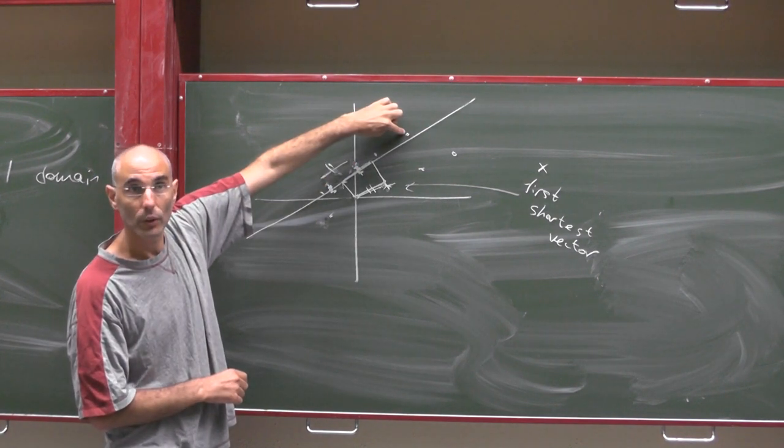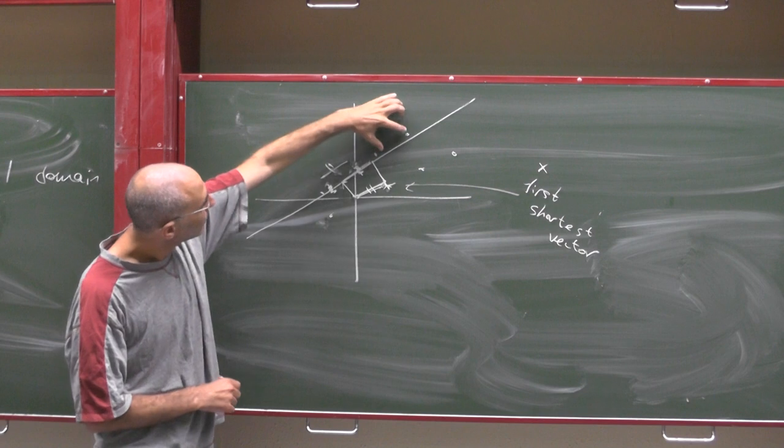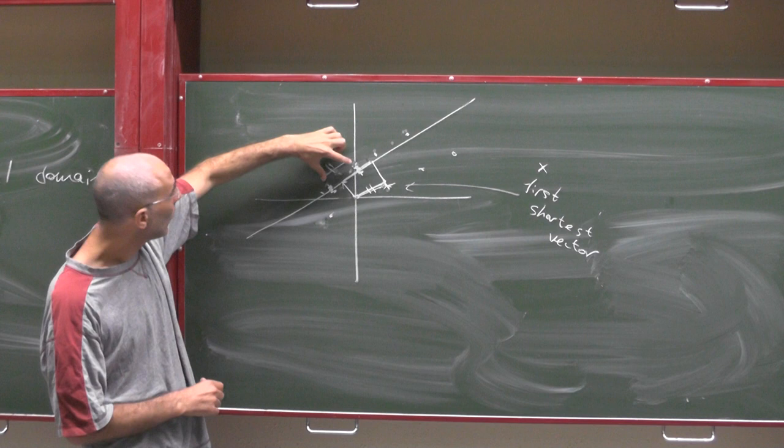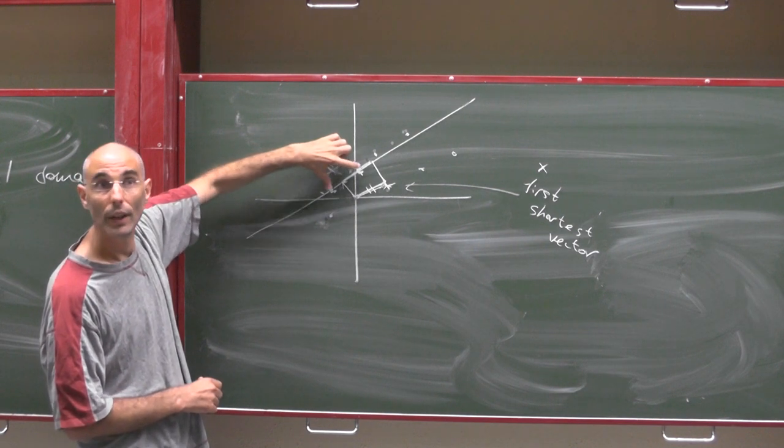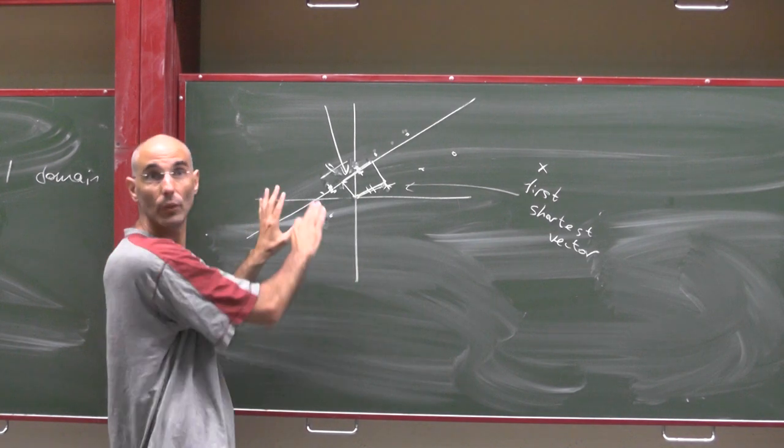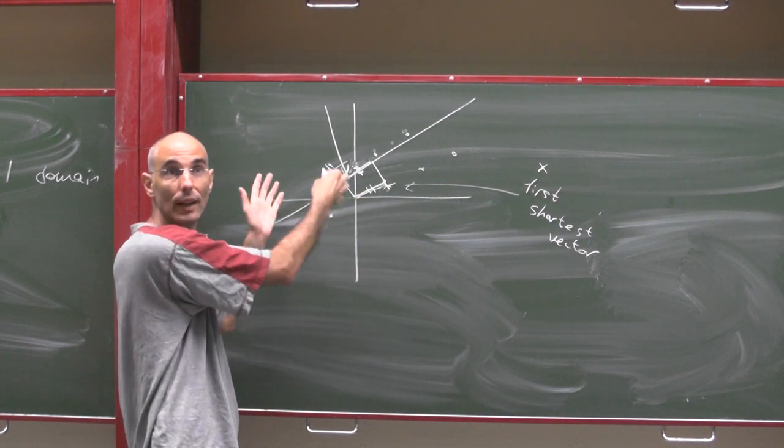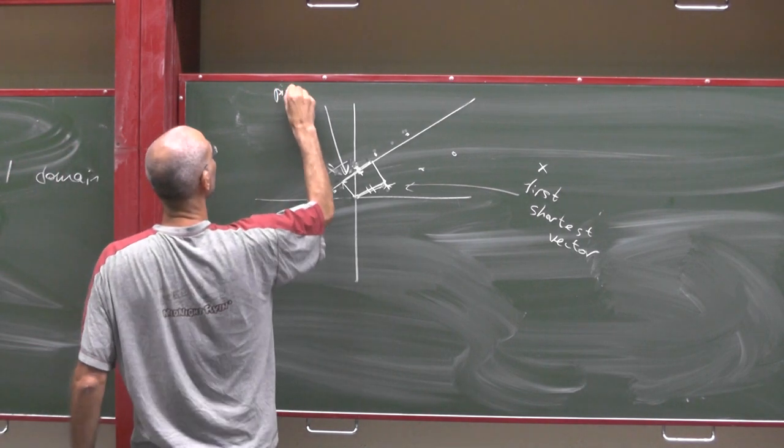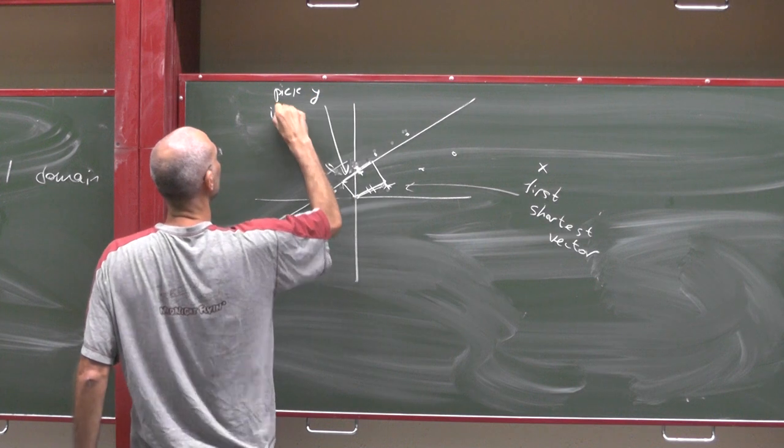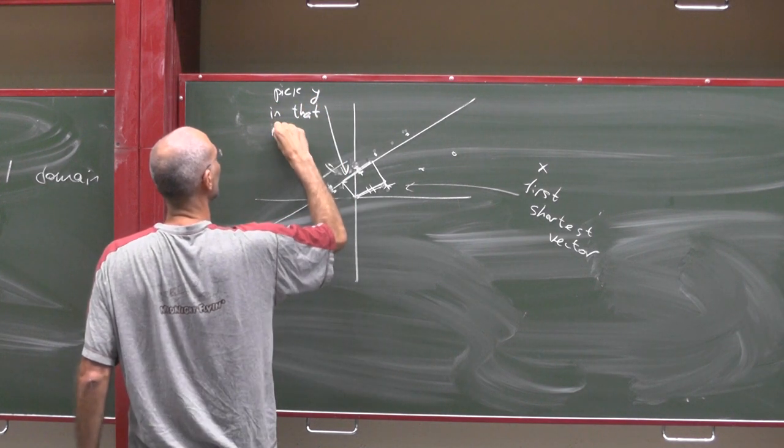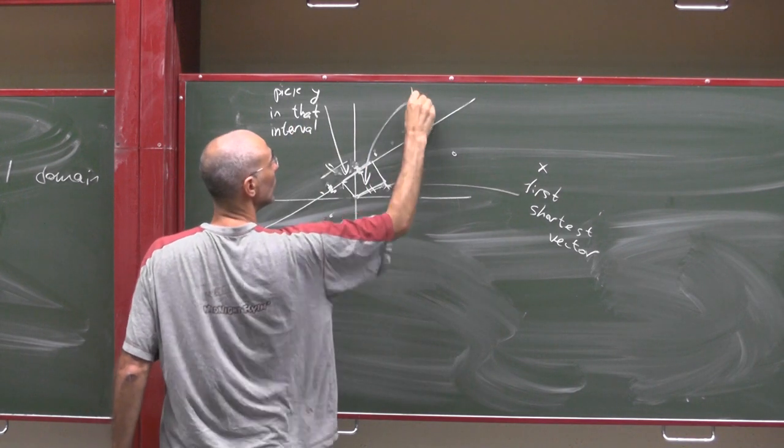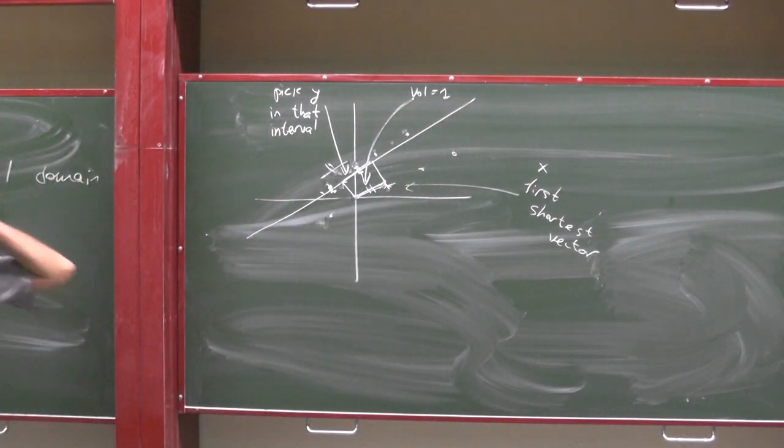Take any lattice vector here and move it by multiples of my shortest vector. Because it is shortest, I must hit that interval once. I will not write this algorithm down precisely. I put some pictures on the board. Pick y in that interval and here you have volume 1 of this rectangle. I hope that makes sense.